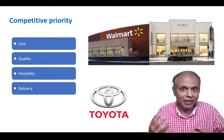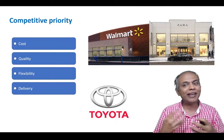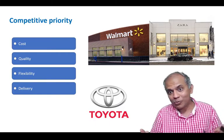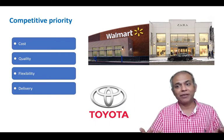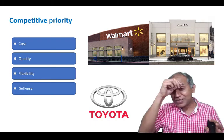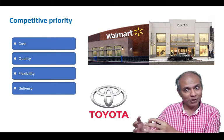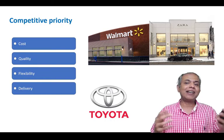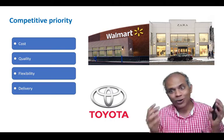Toyota keeps managing to introduce new models and new variants faster than other auto manufacturers, and they are also relatively quick on delivery. So this example is cited to say that firms actually do not need to choose their competitive priority, but can simultaneously excel at all competitive priorities, and need to design their flows accordingly.